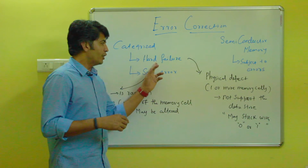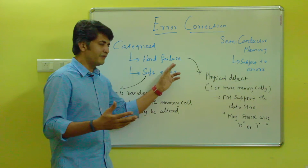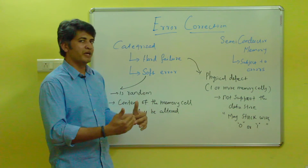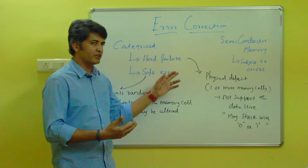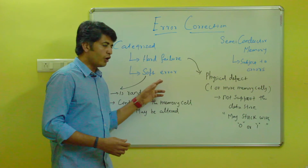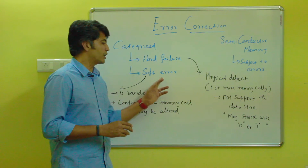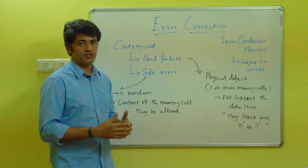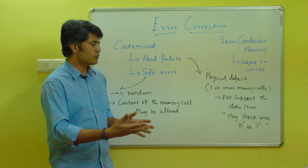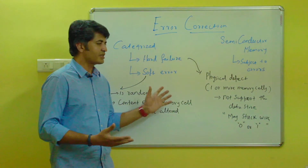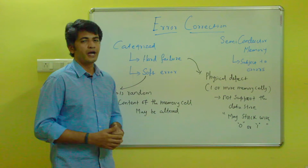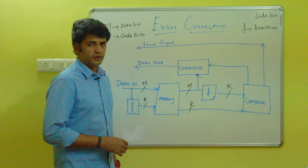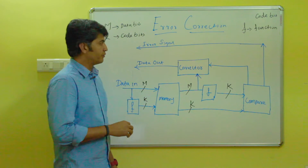If you are facing a hard failure, the only thing you can do is report it — the operating system may report this error to the user. But for a soft error, this particular error may be corrected with the help of additional functions or features. In the next slide we will see how this error can be handled.